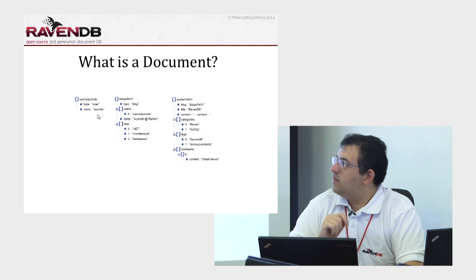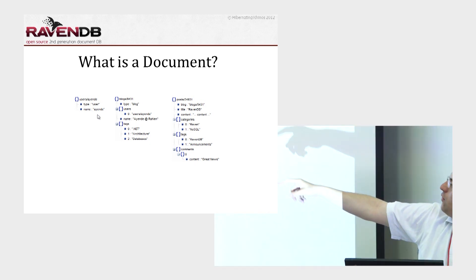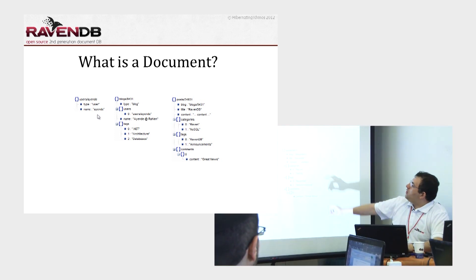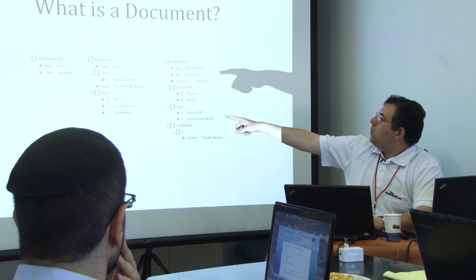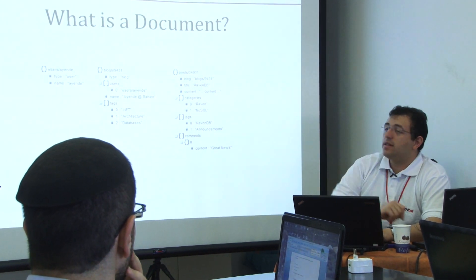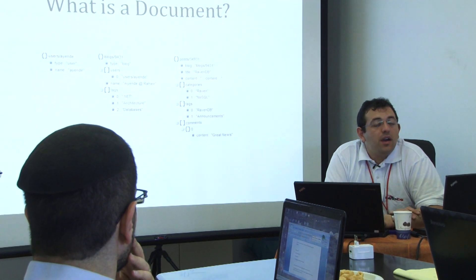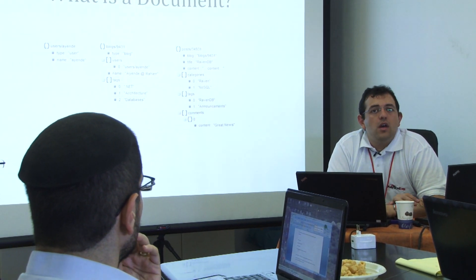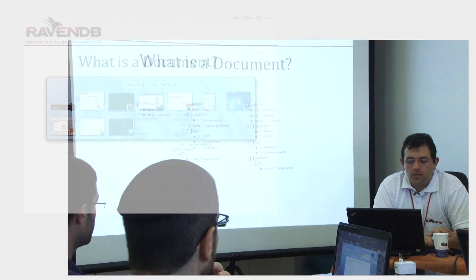We have documents of growing complexities. On the blog example, we actually have a user reference — user.sashayende — so now we have references to other documents.